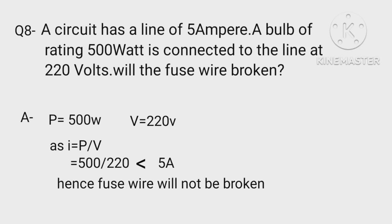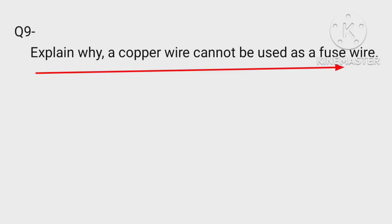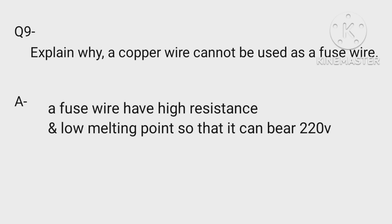Explain why a copper wire cannot be used as a fuse wire. Since the melting point of copper wire is very high, it cannot be used as fuse wire. A fuse wire should have high resistance and low melting point so that it can bear 220 volt only.